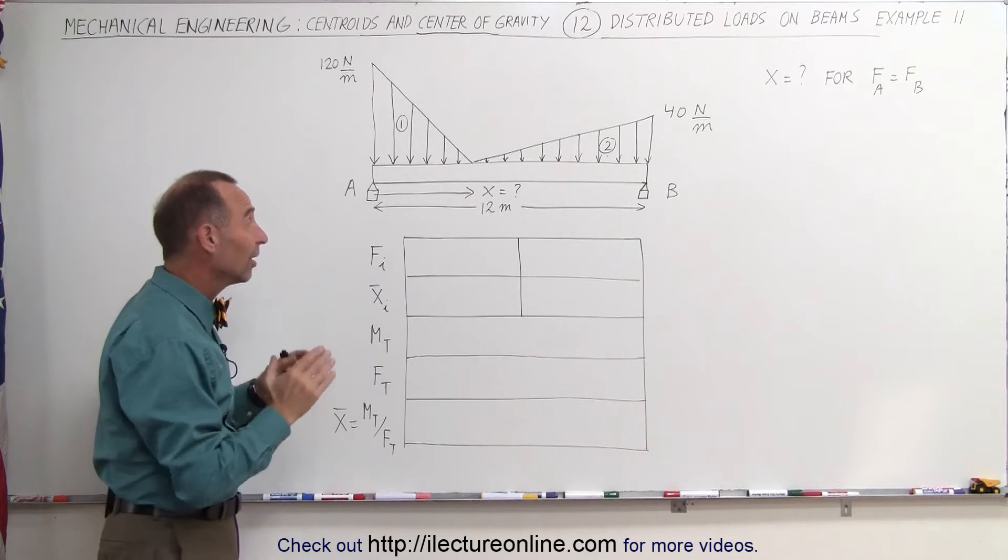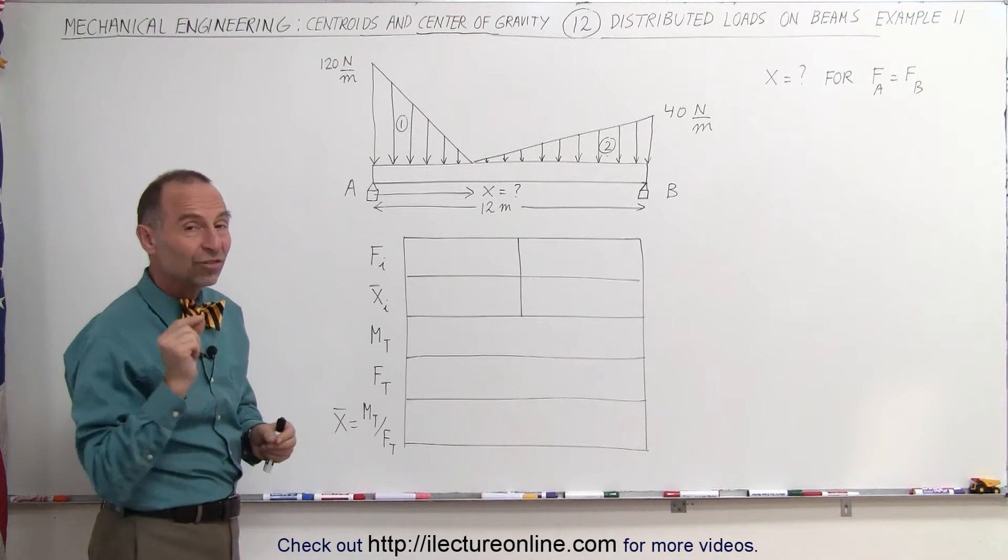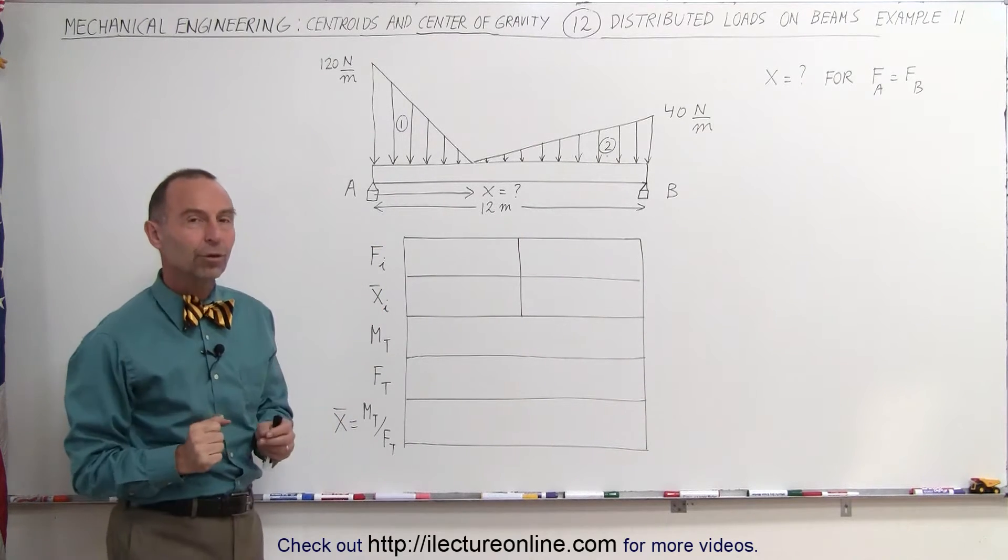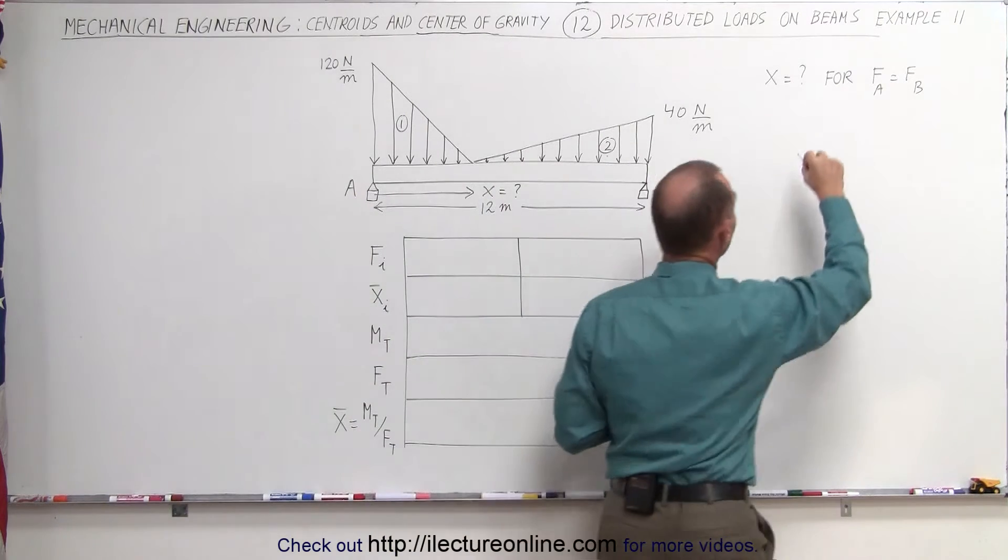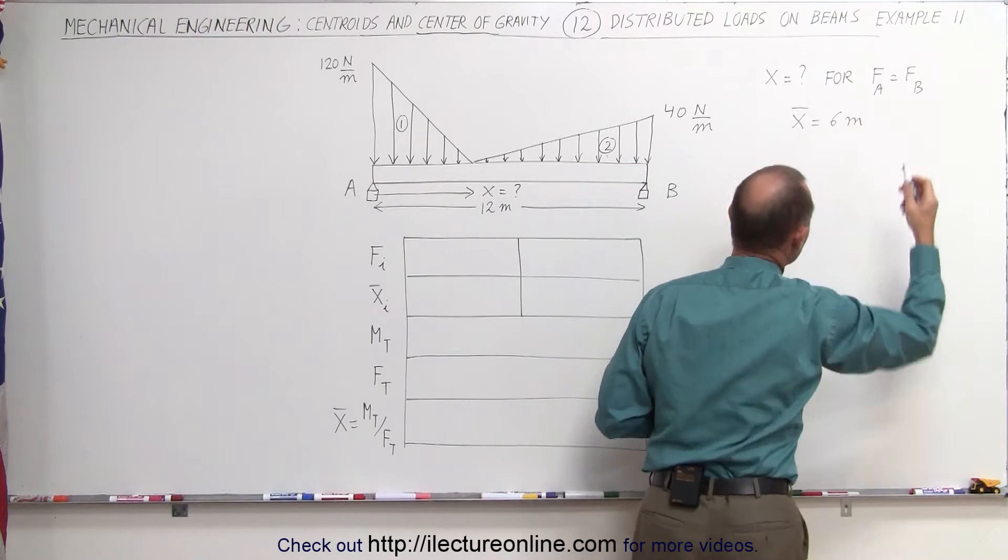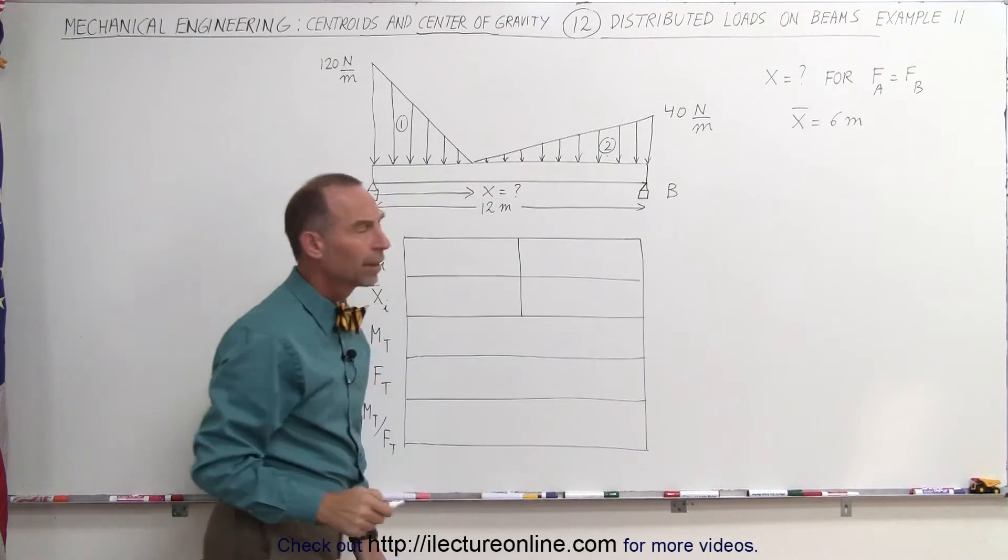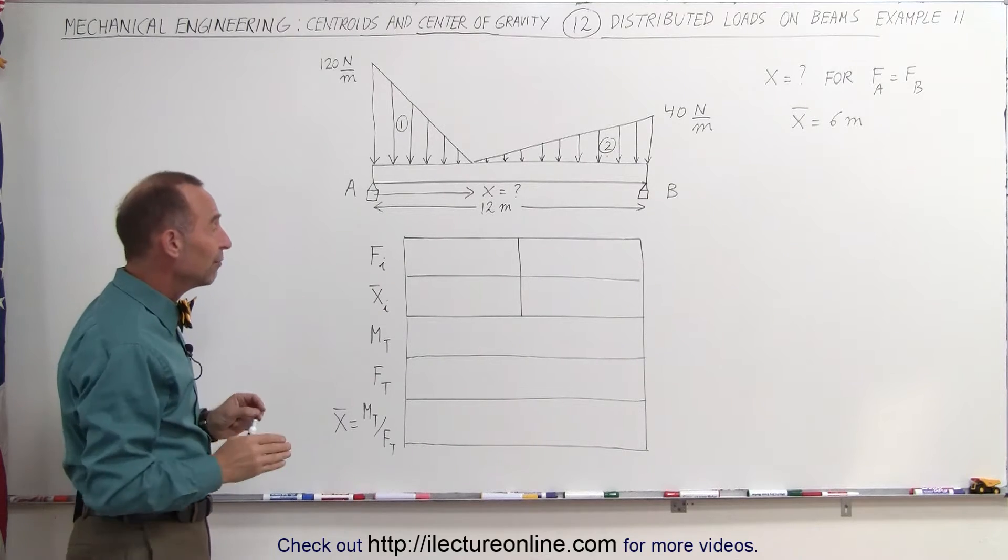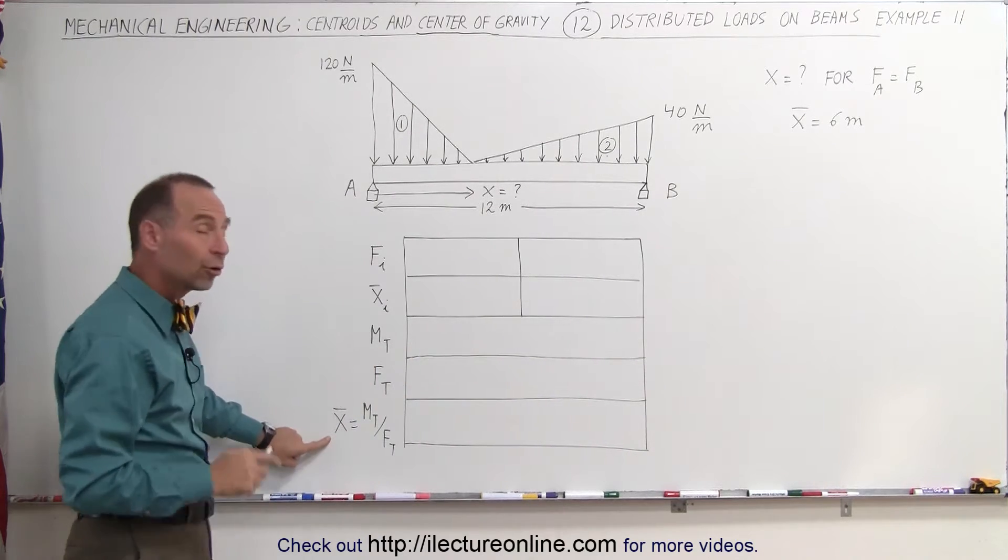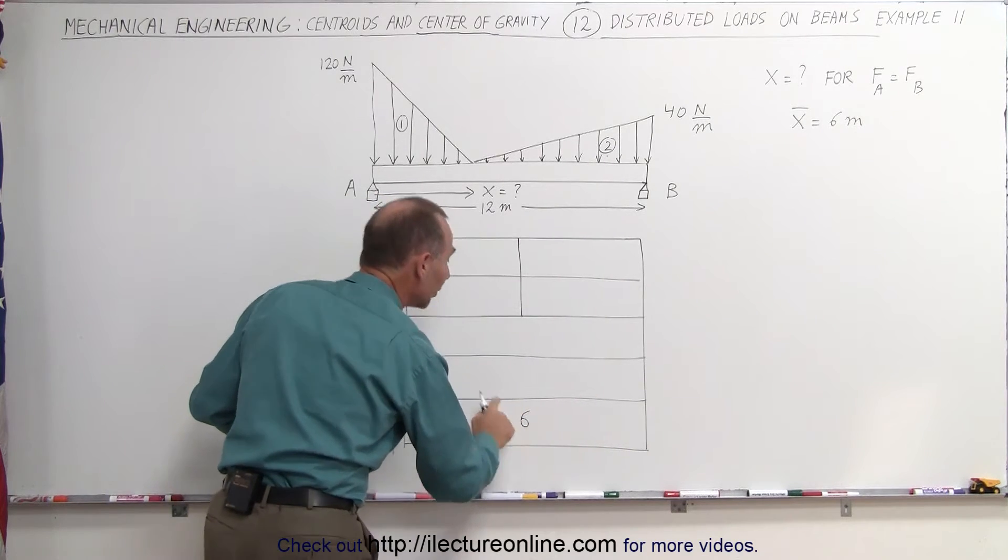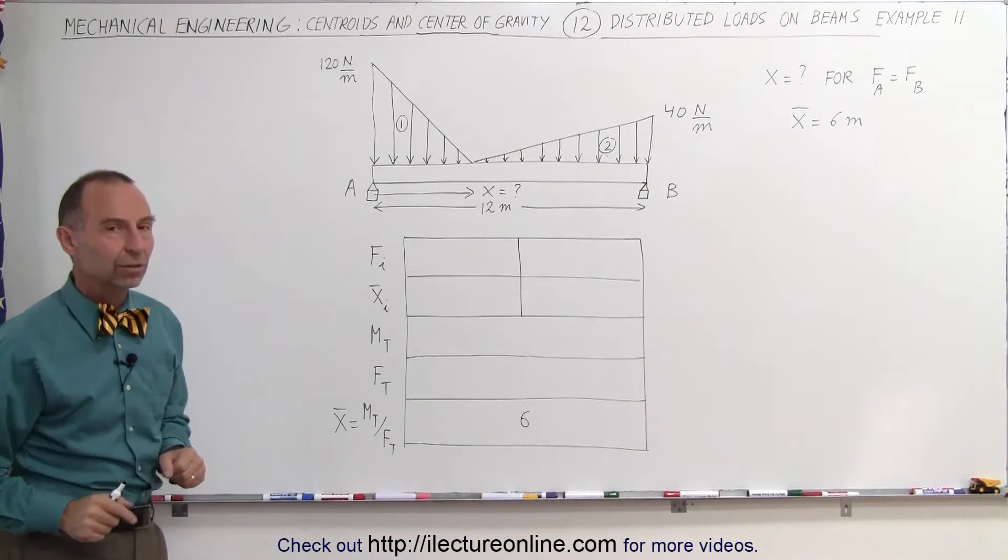The key to understanding this is, for that to be true, the centroid of the load distribution must be exactly at the halfway point of the beam. In other words, the x-coordinate of the centroid must be equal to 6 meters, the beam being 12 meters. We're now going to solve the problem in the exact same way as before using this table, but we already know that the x-coordinate of the centroid is at 6 meters, and knowing that will help us find what x is equal to.